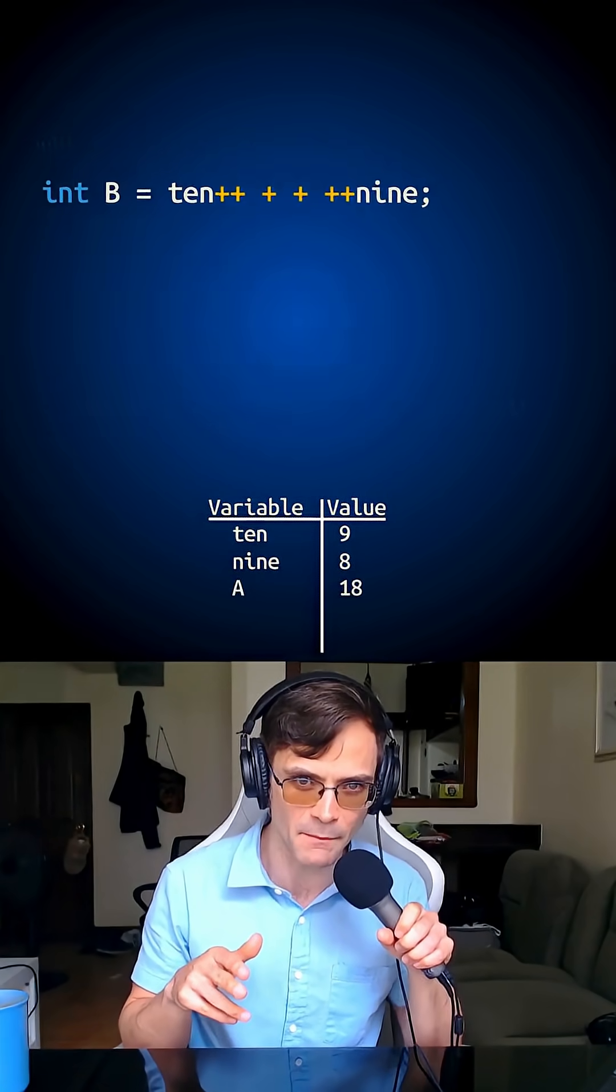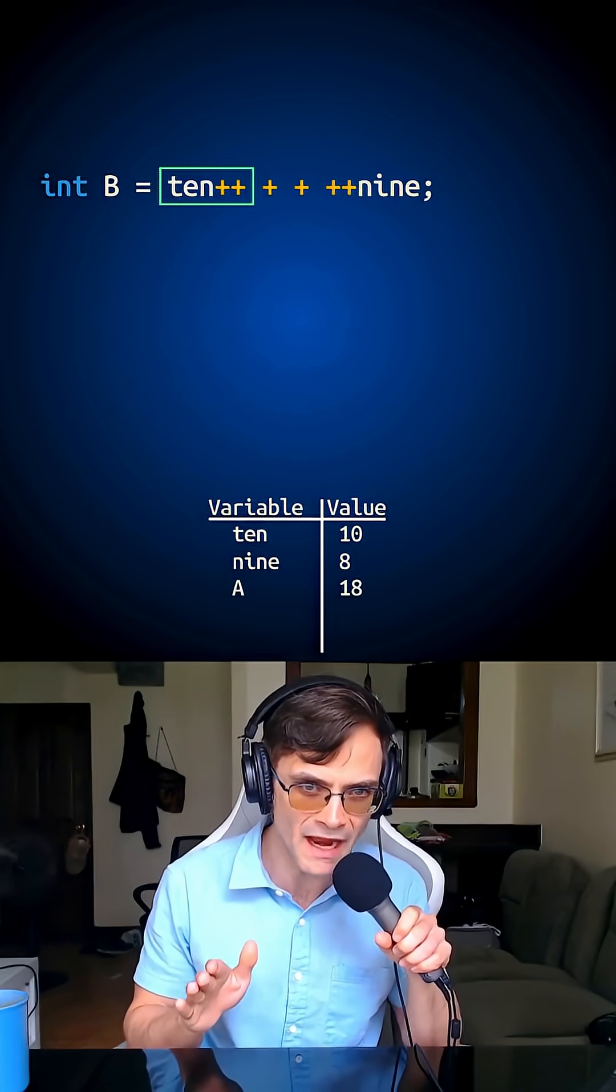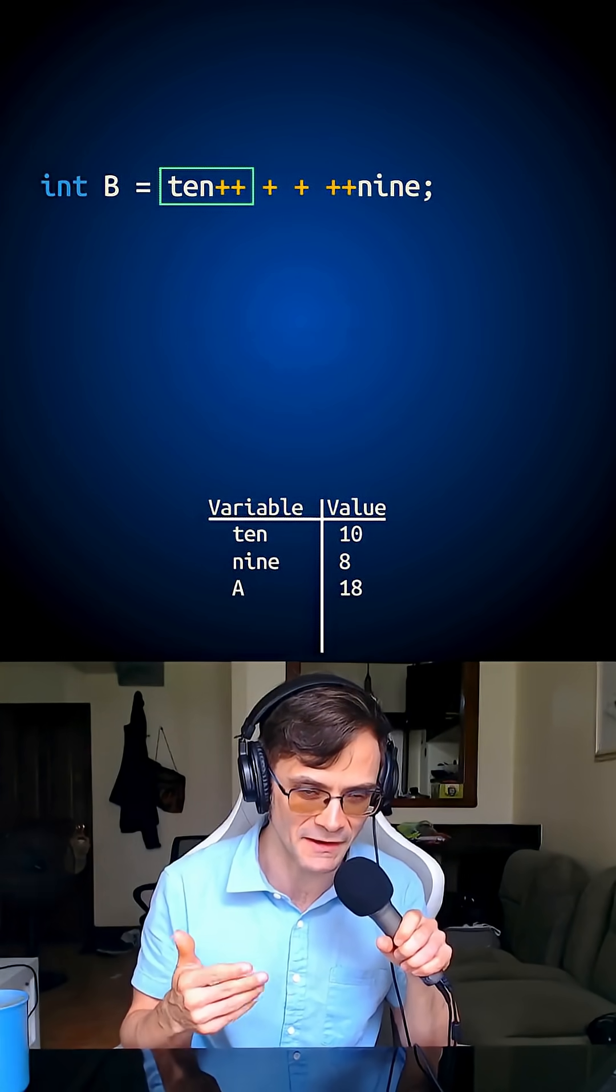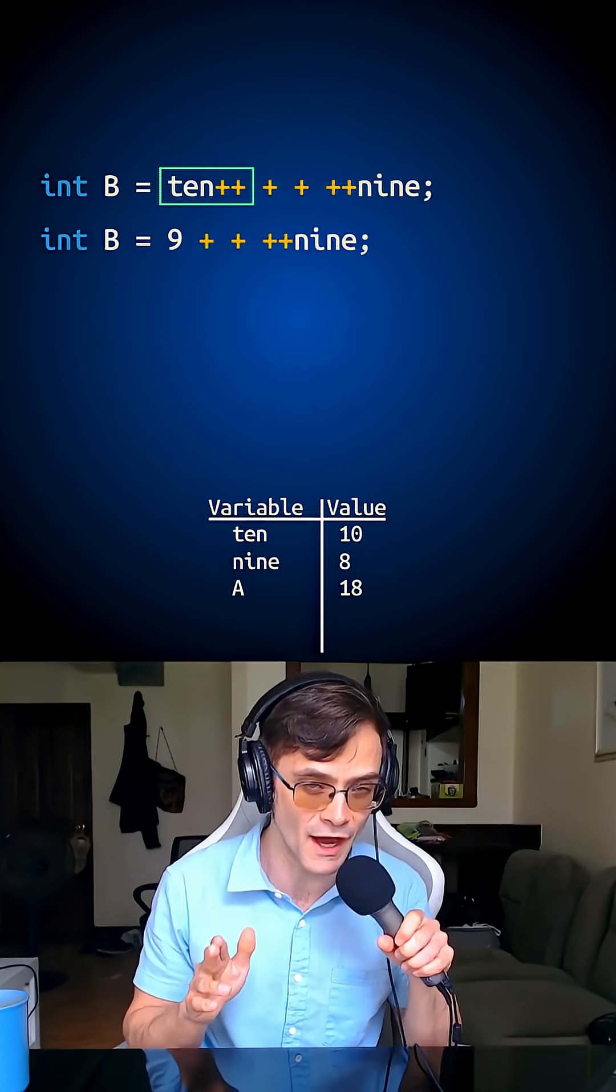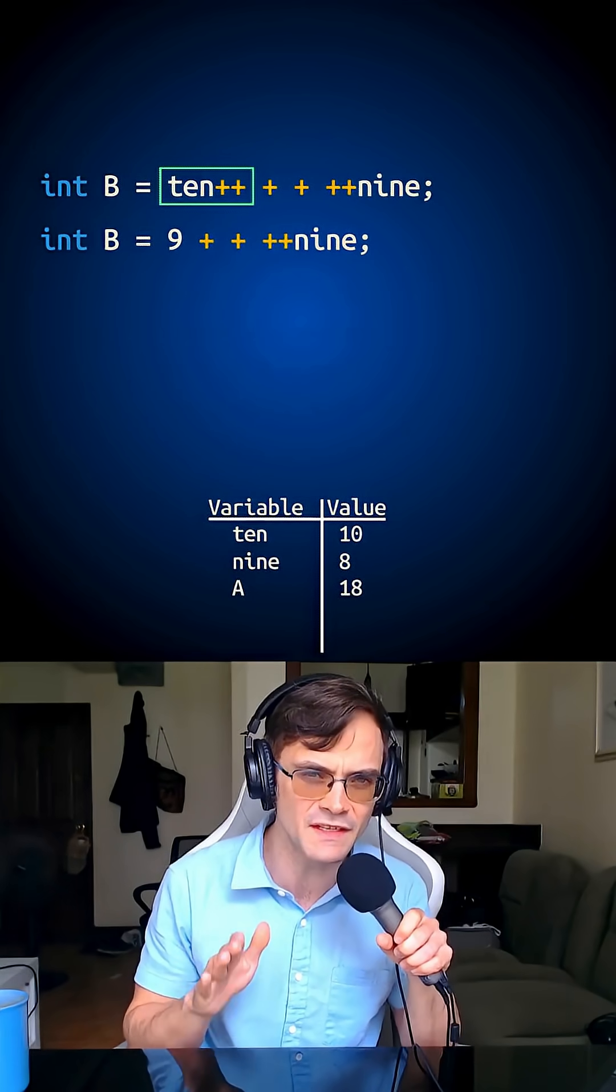How about this next line? First I do 10 plus plus. This increments the variable 10. But when I do the math on this line, do I use the number 9 or the number 10? I'm actually going to use the number 9, because that's what it was before I did the increment, and this is suffix increment.